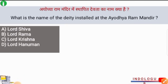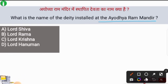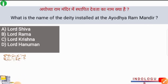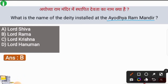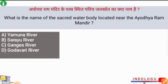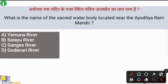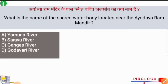What is the name of the deity installed at the Ayodhya Ram Mandir? The correct answer is option number B, i.e. Lord Rama. The idol of Lord Rama is installed in Ayodhya Ram Mandir. What is the name of the sacred water body located near the Ayodhya Ram Mandir? The correct answer is option number B, i.e. the Sarayu River. Ayodhya is located on the bank of the Sarayu River.